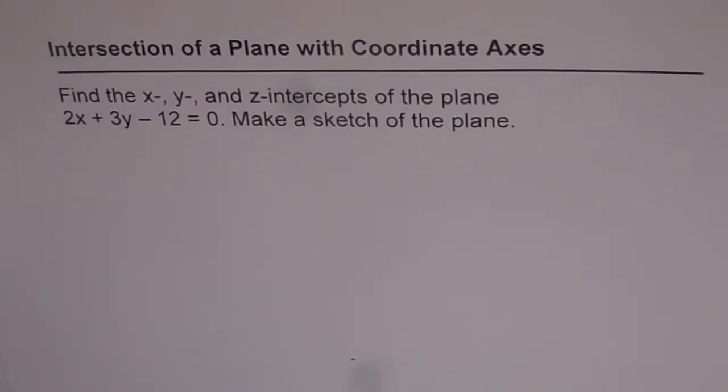Intersection of a plane with coordinate axes. Find the x, y, and z intercepts of the plane 2x plus 3y minus 12 equals 0. Make a sketch of the plane.